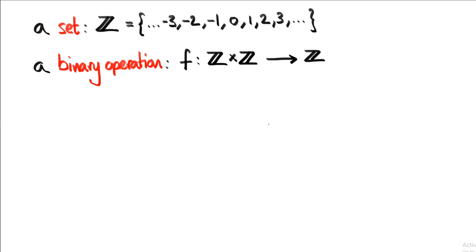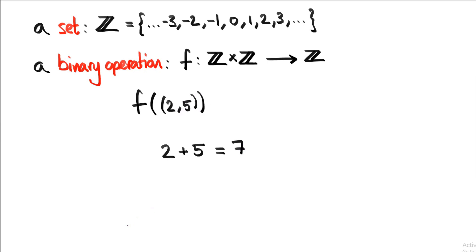That all sounds a bit complicated, but it's not. I'm going to give you an example of a binary operation that you've been using since you first started school. 2 plus 5 equals 7 — this is a binary operation. It has two whole numbers on the left, it combines them in some way, and produces a whole number on the right. We could write it another way: the function takes in the pair of numbers 2 and 5, and then produces the number 7. So addition is a binary operation, and because we use it so often, we've come up with a shorthand way of writing it.